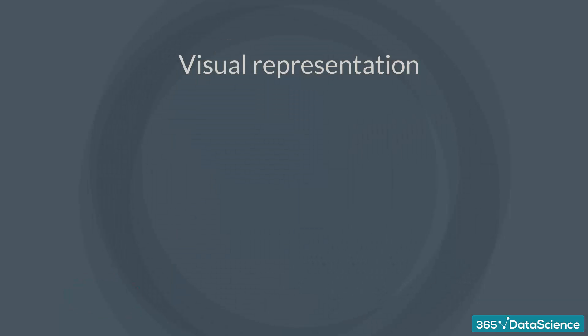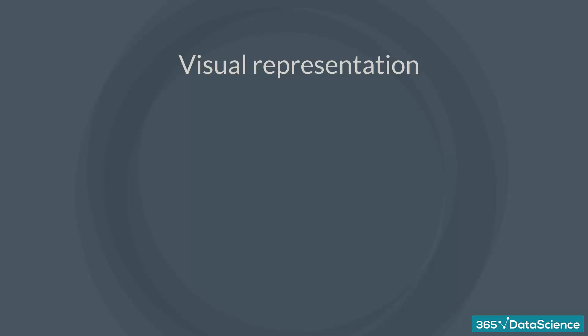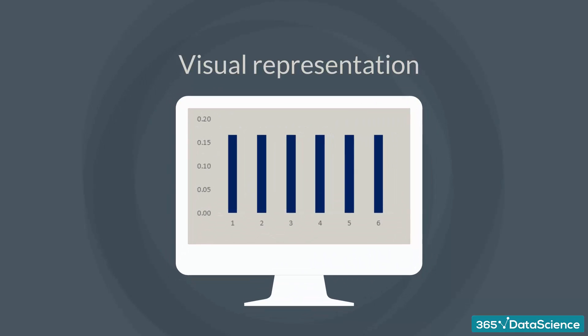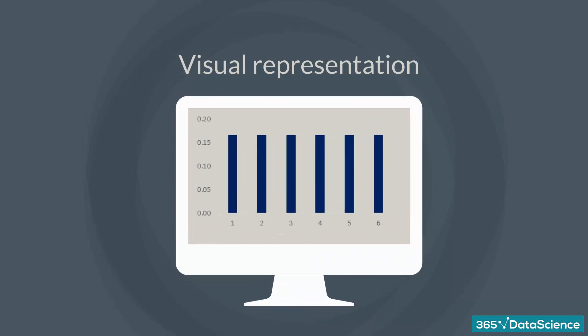Each probability distribution is associated with a graph describing the likelihood of occurrence of every event. Here is the graph for our example. This type of distribution is called uniform distribution. It is crucial to understand that the distribution is defined by the underlying probabilities and not the graph. The graph is just a visual representation.